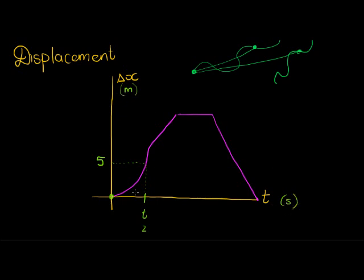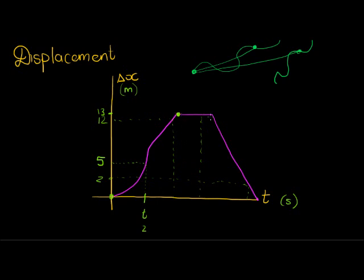Usually we show units here — meters and seconds, or it might be kilometers and hours. So at different times we read off different displacements: at one time the value is 12, at another it's 13, and so on. The key thing to notice is that between two particular points the displacement stays at 13 — whatever those times are, the displacement stays constant at 13.